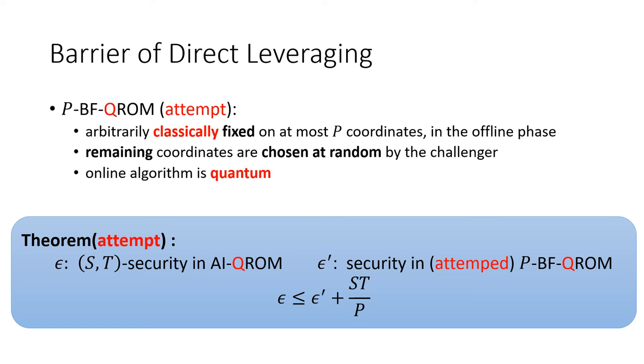If the theorem could be proved, we would have an intuitive and easy way to analyze post-quantum non-uniform security in the random oracle model, just like what we did for the classical setting.